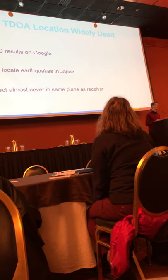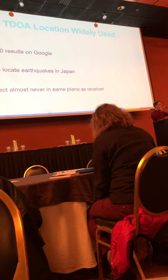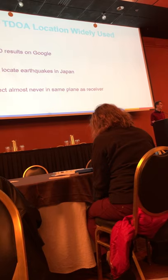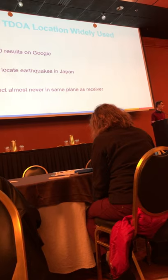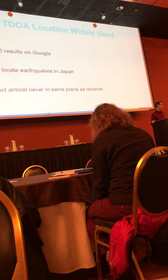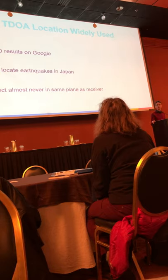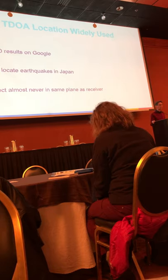The most common way that animals are located in the ocean is to assume that they're on a horizontal plane, and you use a two-dimensional model to locate them from the time differences of arrival. It's very difficult to determine depth, but it's not so hard to discover their latitude and longitude. If you type in 2D TDOA — two-dimensional time difference of arrival — you will get 73,000 hits on Google. It's a very widely used technique.